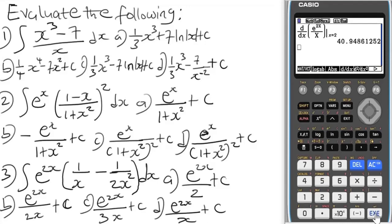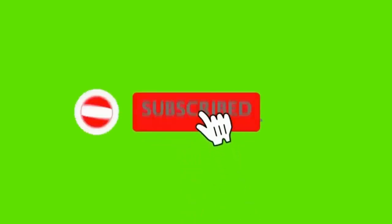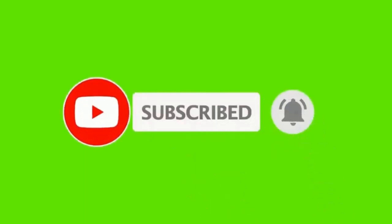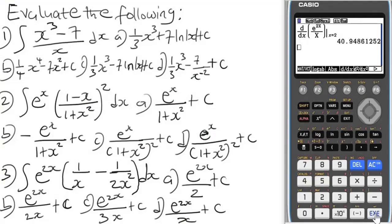This is basically how you solve problems involving indefinite integration using the Casio fx-CG50 calculator. These are problems I can solve in less than 30 seconds — I was only slow because I was explaining. Hope you learned something interesting. If you're new to the channel, subscribe for more videos like this. Like, share, and comment, and feel free to ask questions in the comment section below.